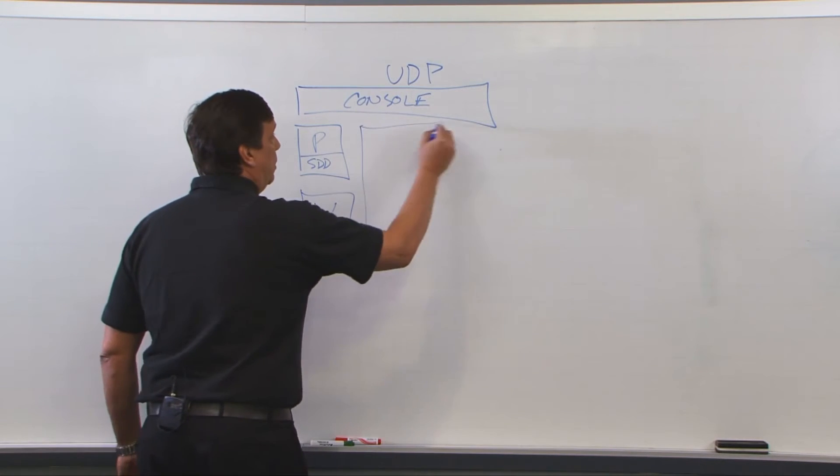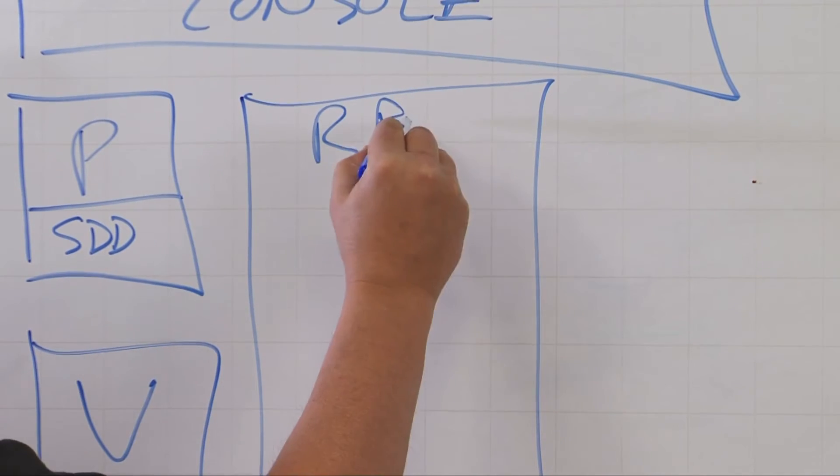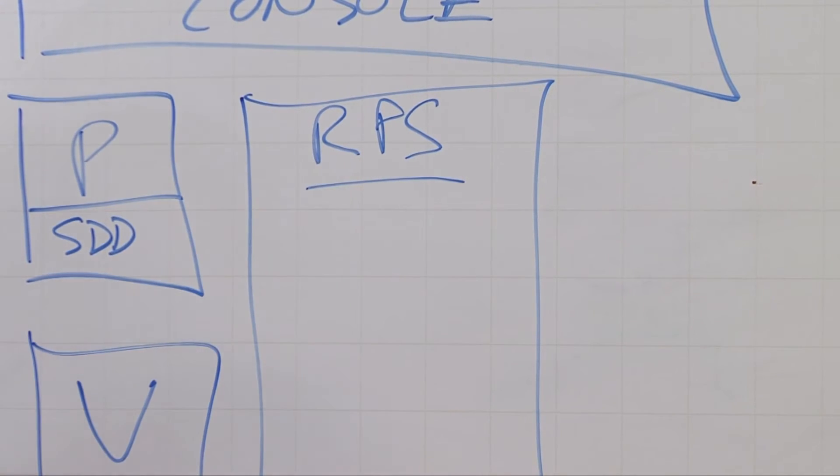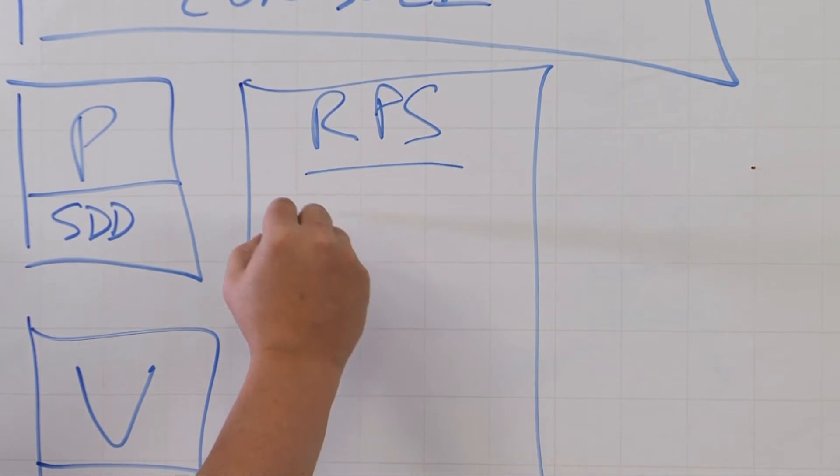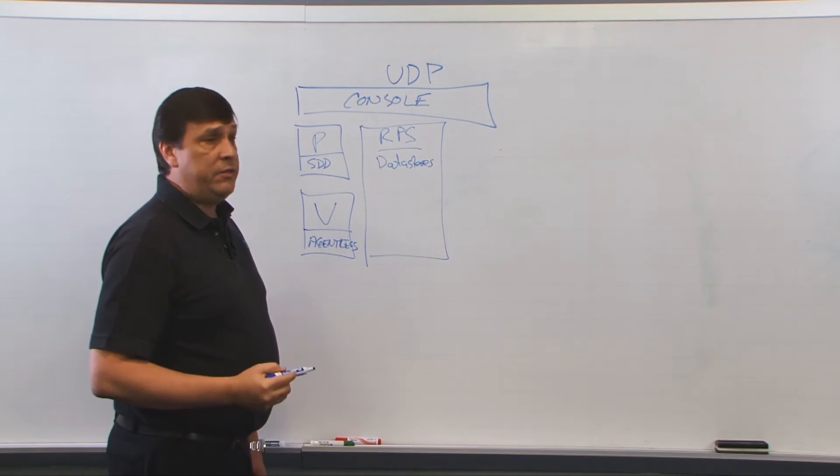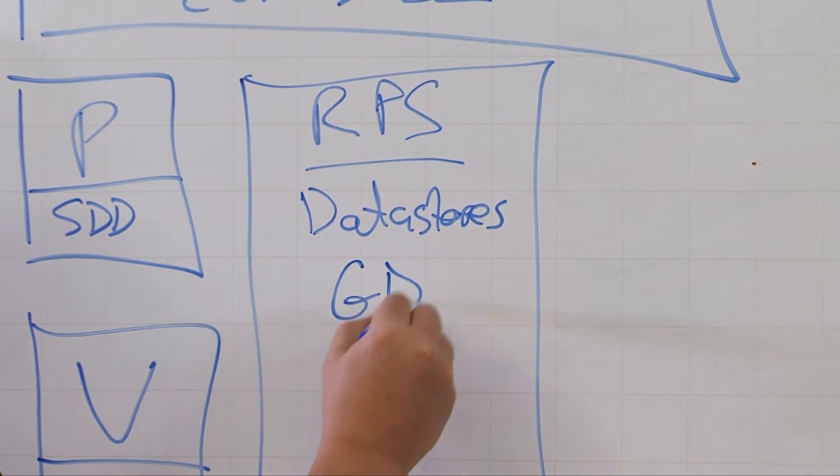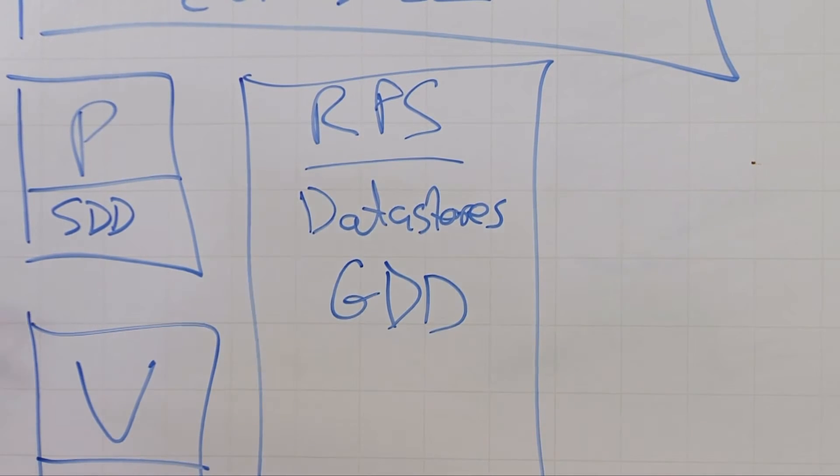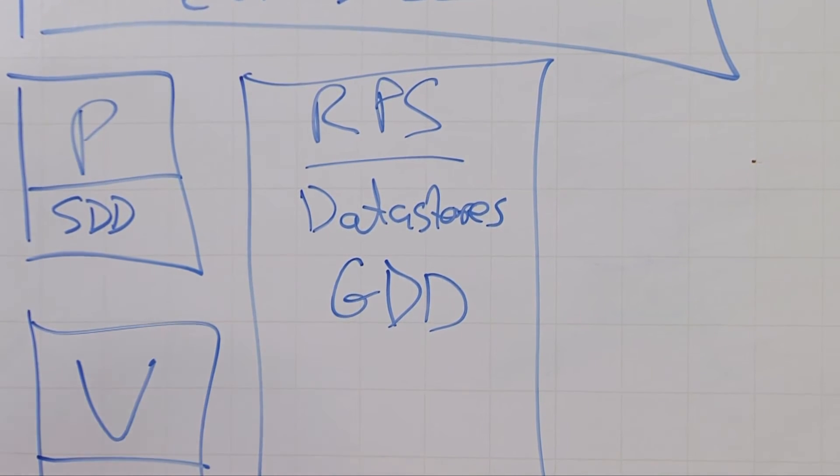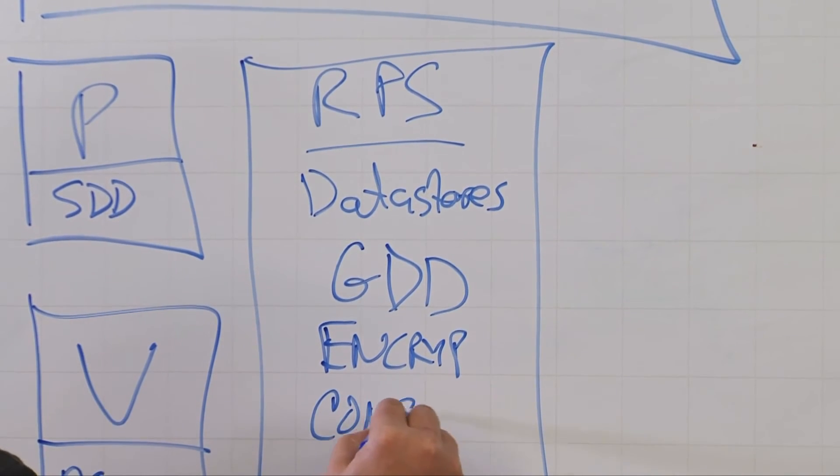All of this going to what we call a recovery point server. This recovery point server has obviously data stores that can be configured to segregate data, if necessary. But most importantly, it has global deduplication across all nodes that are coming into it. It also has encryption capabilities and compression built in.